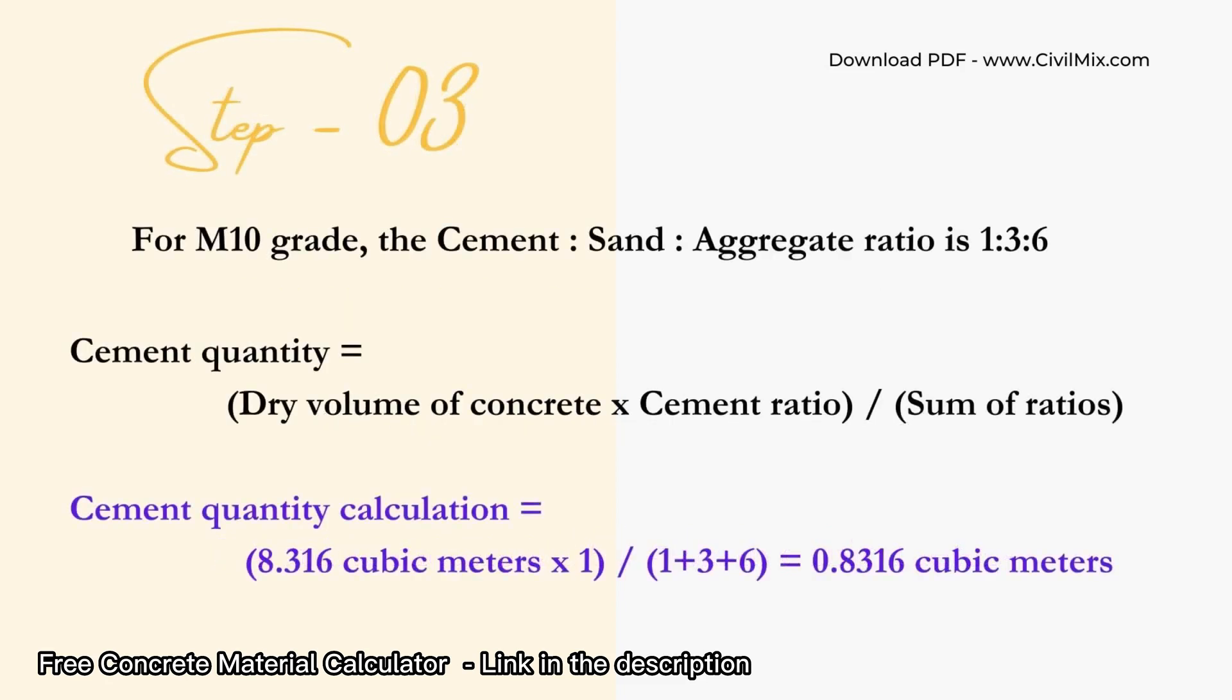Now we need to calculate the quantity of cement required for our concrete slab. To do this, we use this formula. For M10 grade, the cement, sand, and aggregate ratio is 1:3:6. By substituting the values in the formula, we get the cement quantity required as 0.8316 cubic meters.